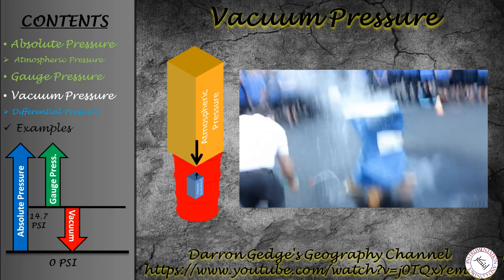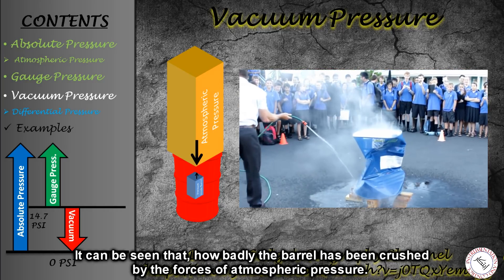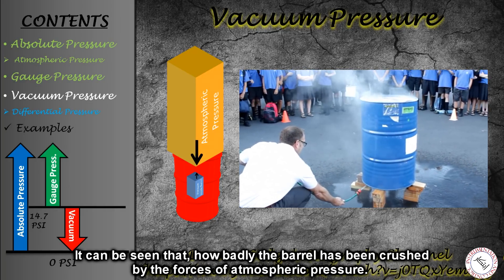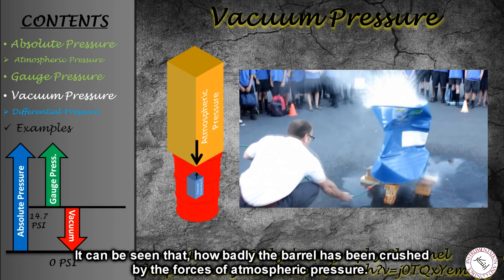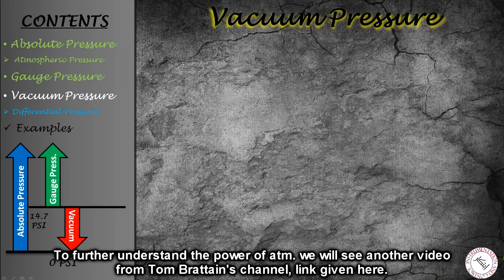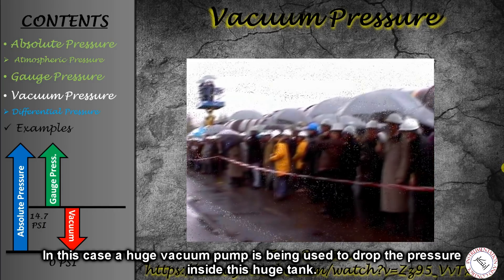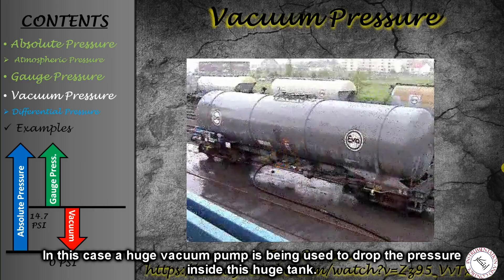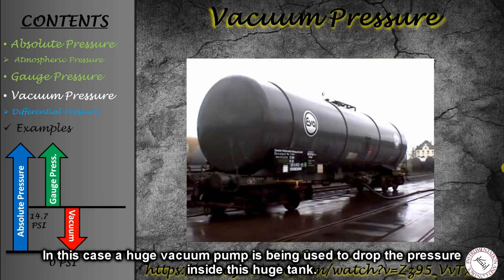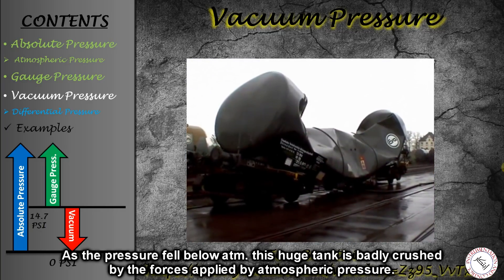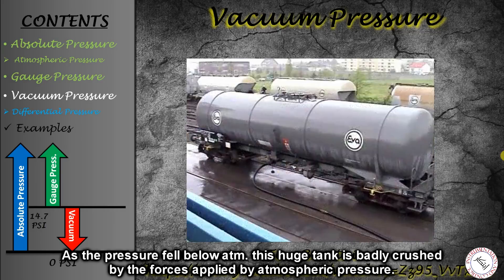If the structural strength is not enough, the barrel will be crushed. You can see how atmospheric pressure applied a very high force. To further demonstrate the power of atmospheric pressure, there is another video from Tom Breton, shown here. In that video, a huge vacuum pump removed the air from inside a large tank, and as the pressure inside fell below atmospheric, the structure collapsed — showing how atmospheric pressure crushed a very strong and huge tank.